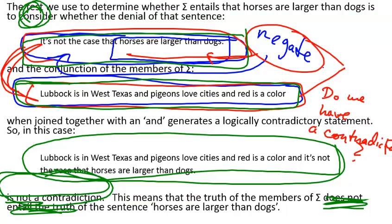'Horses are larger than dogs' is not entailed by sigma. We negated 'horses are larger than dogs' and observed that its negation does not contradict sigma. If that's the case, then 'horses are larger than dogs' does not follow from sigma.